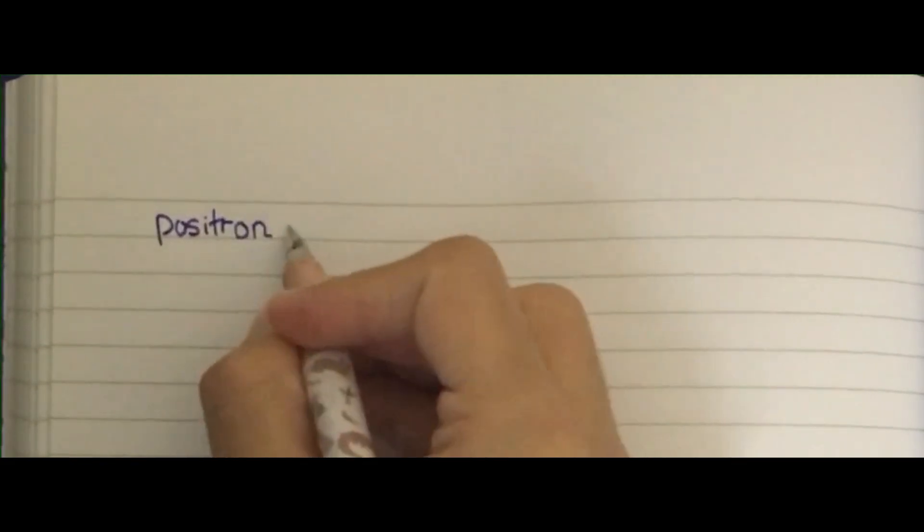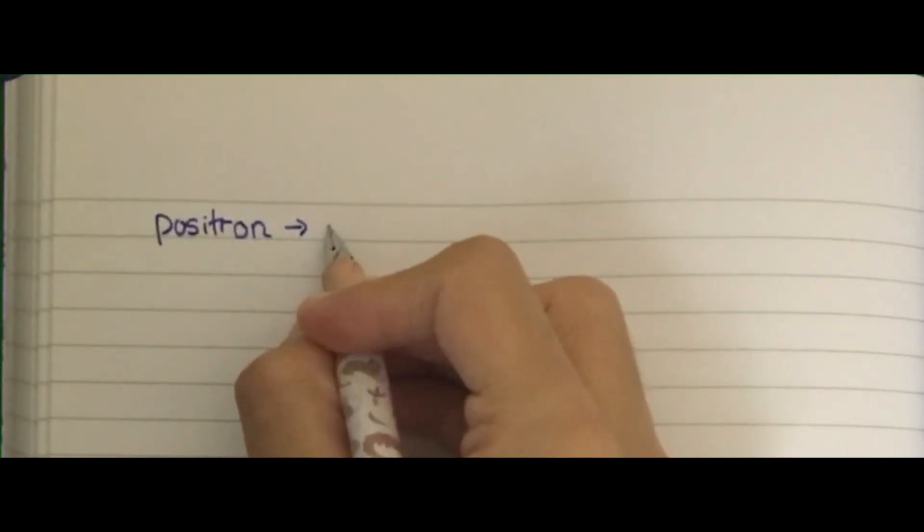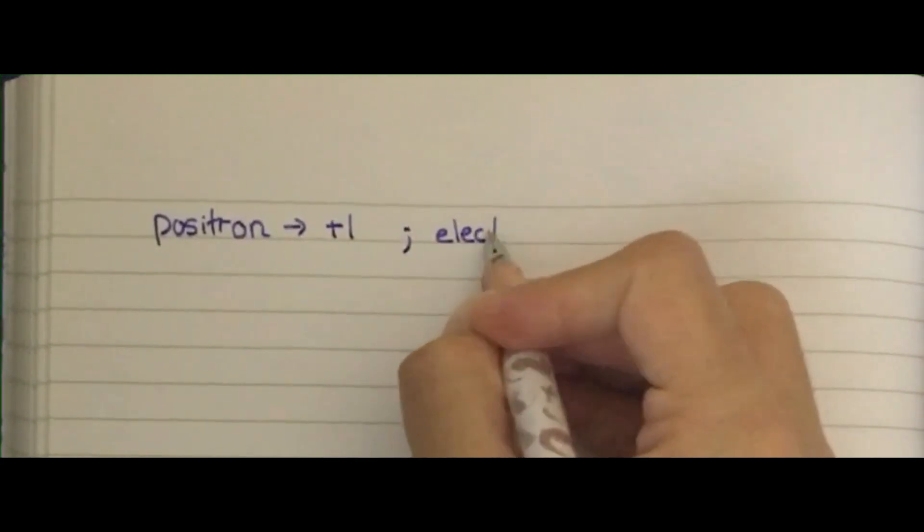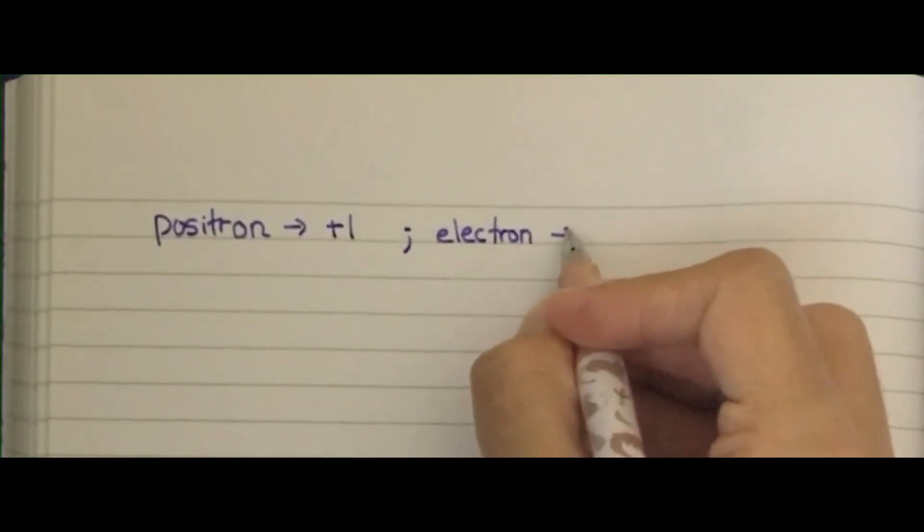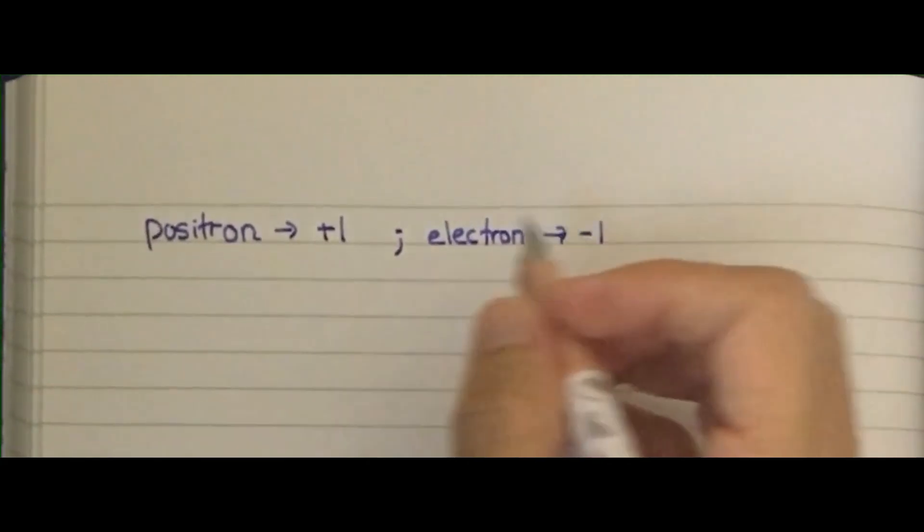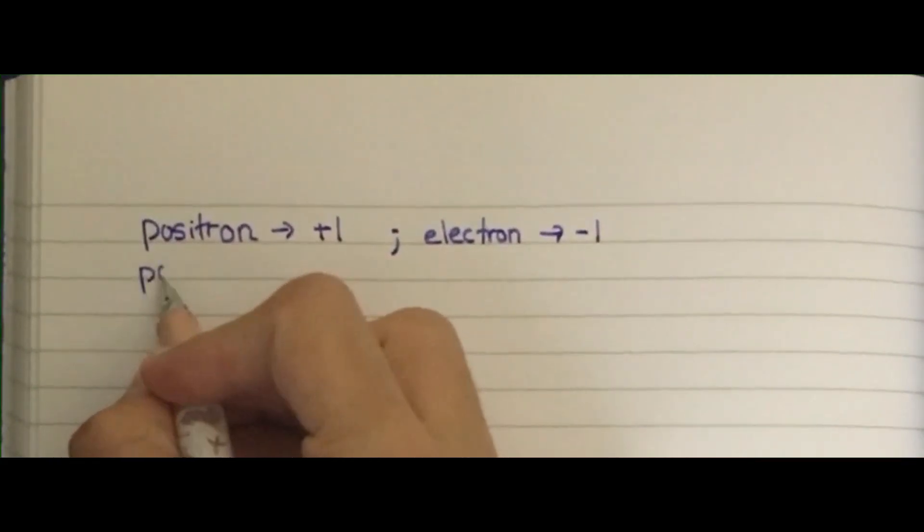As we know, we can compare it by the charge or by the lepton number. Positron has a positive one charge, and electron has a negative one charge. Or you can compare it by the lepton number.